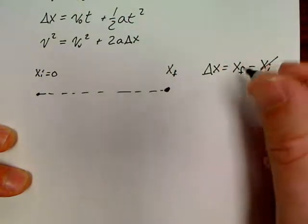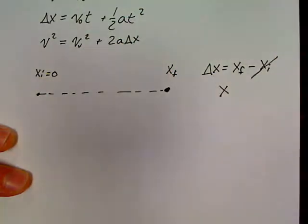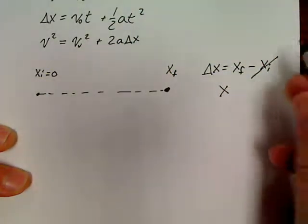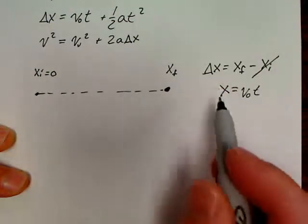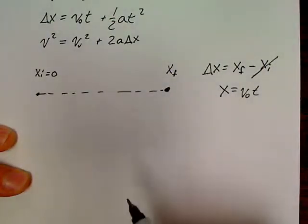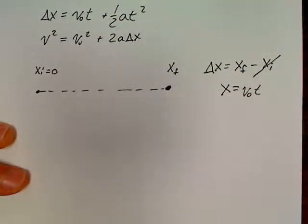So half the time, I don't even write delta X. You just see me write X. I don't write delta X. I just write like X equals V₀T. So anyway, just to clear up how I write the problems first, let's take care of that.